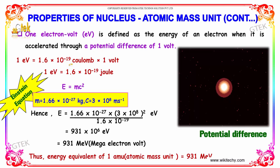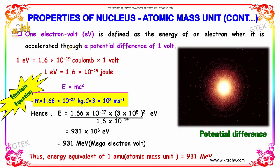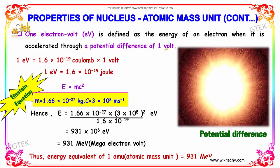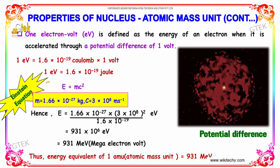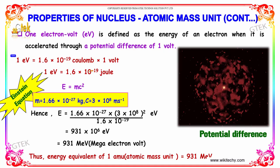One electron volt is defined as the energy of an electron when it is accelerated through a potential difference of 1 volt. So 1 eV is equal to 1.6 into 10 power minus 19 coulomb into 1 volt, that's 1 eV is equal to 1.6 into 10 power minus 19 joule.